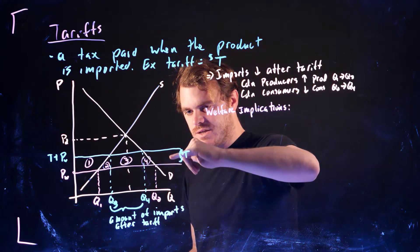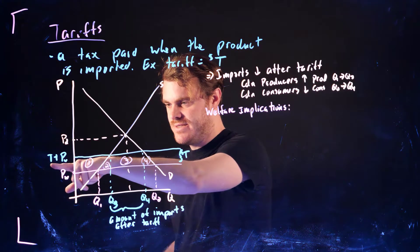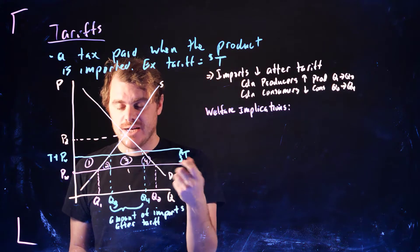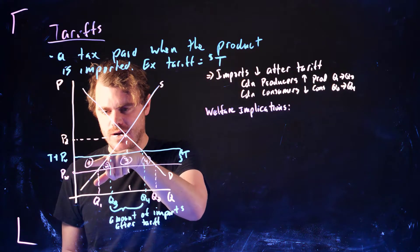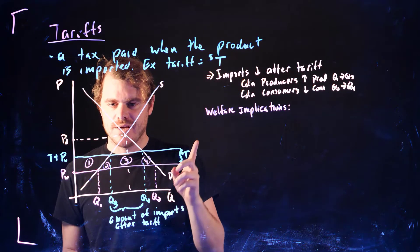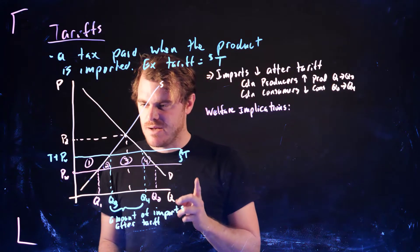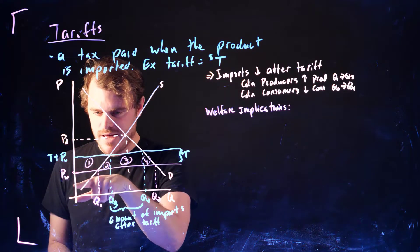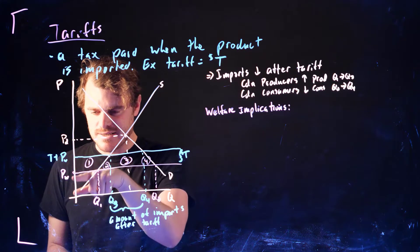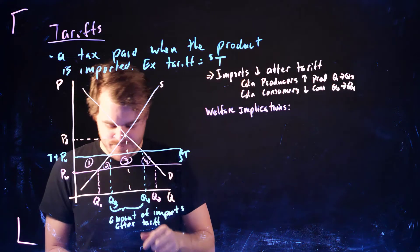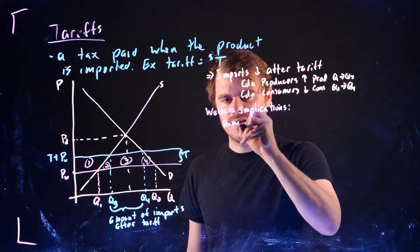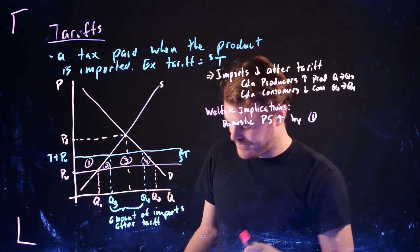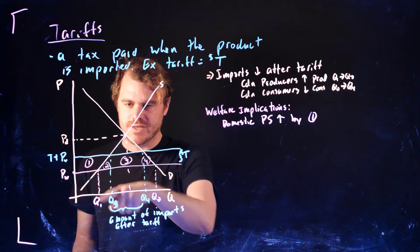When the price goes up from PW to PW plus T dollars, producer surplus for Canadian firms goes up by area one. Remember, below the price and above the supply curve is producer surplus. It used to be a small triangle before, and with the tariff and the higher price it's a larger triangle — the difference is area one. So domestic producer surplus increases by area one.